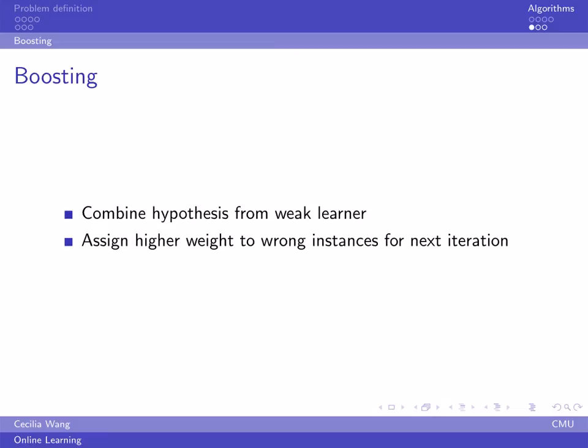The idea of boosting is to combine some weak learners to get a strong learner. In each run, we assign higher weight to the examples where we previously did wrong. We get weak learners from the examples with different weights.